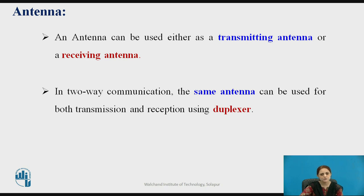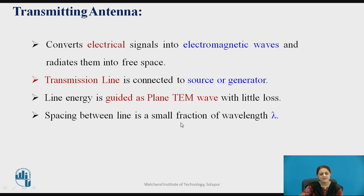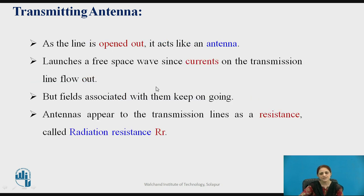In two-way communication, the same antenna can be used as a transmitter or receiver. At the transmitting antenna, the generator is connected — it converts electrical signals into electromagnetic waves and radiates them into free space. The transmission line is connected to the source or generator and guides energy as plane electromagnetic waves with very little loss. The spacing between the line is a very small fraction of the wavelength, denoted by lambda. As this line is opened out in free space, it acts like an antenna that launches a free space wave. Antennas appear to the transmission line as a resistance called radiation resistance, denoted RR.